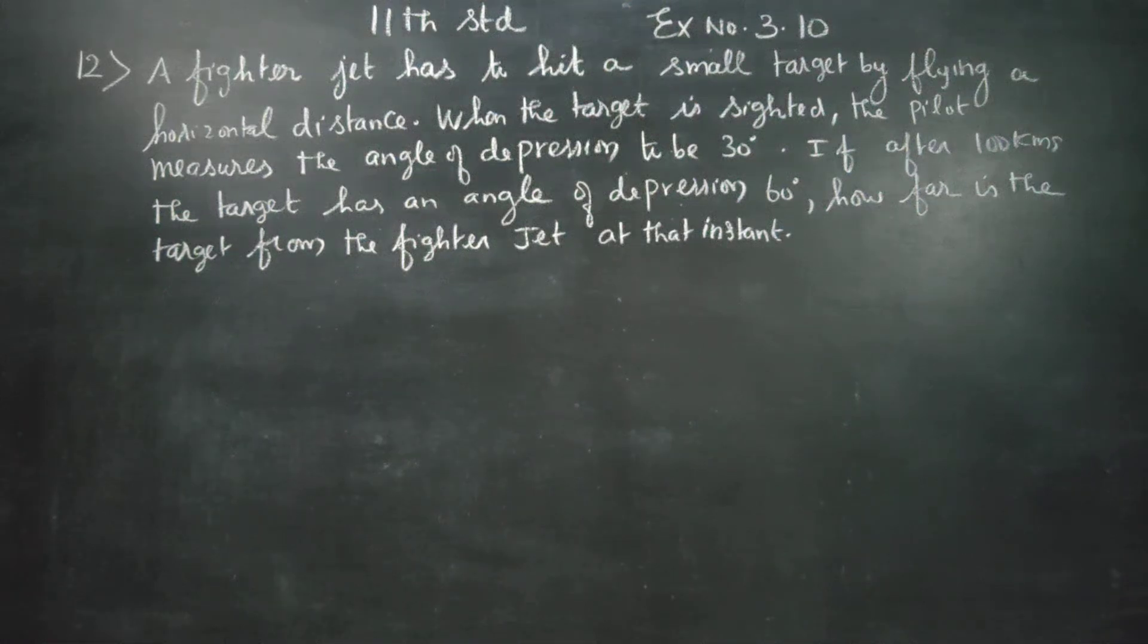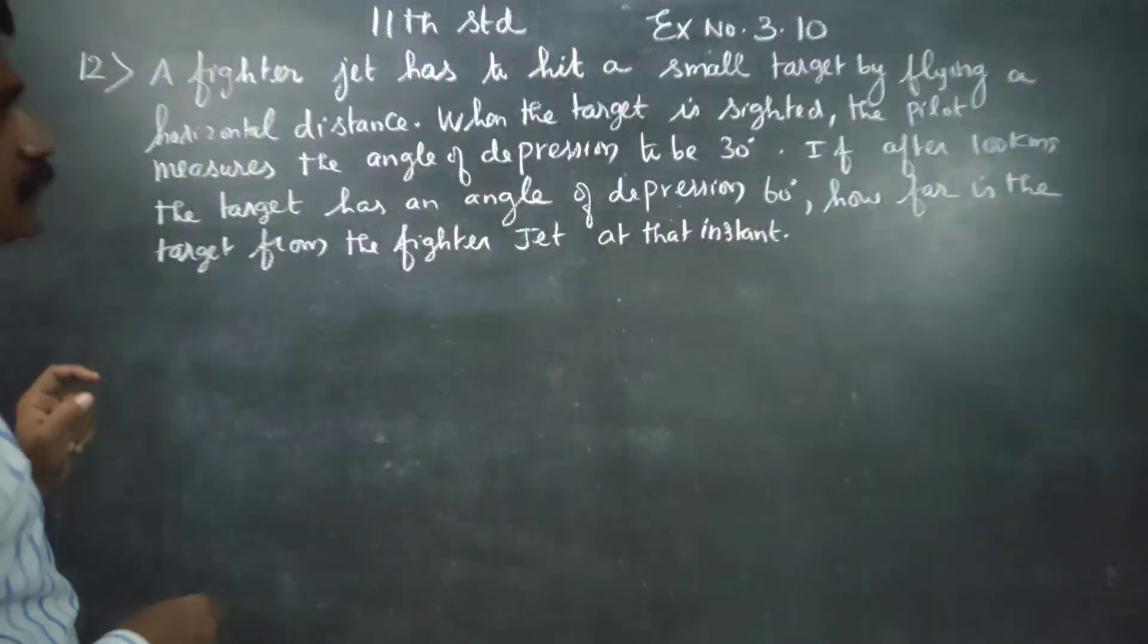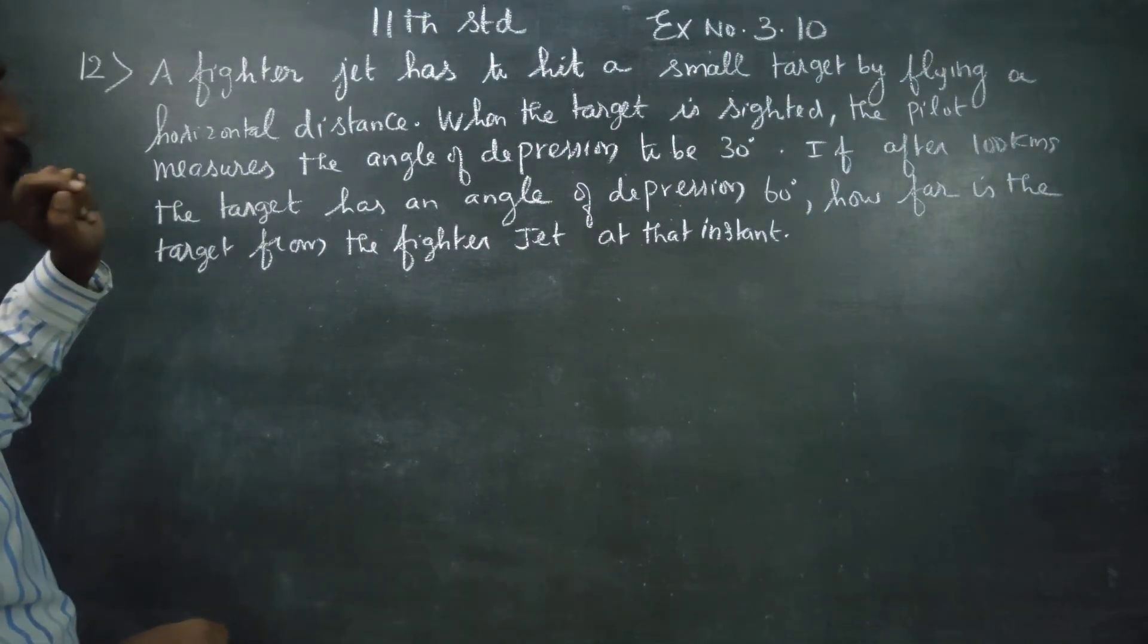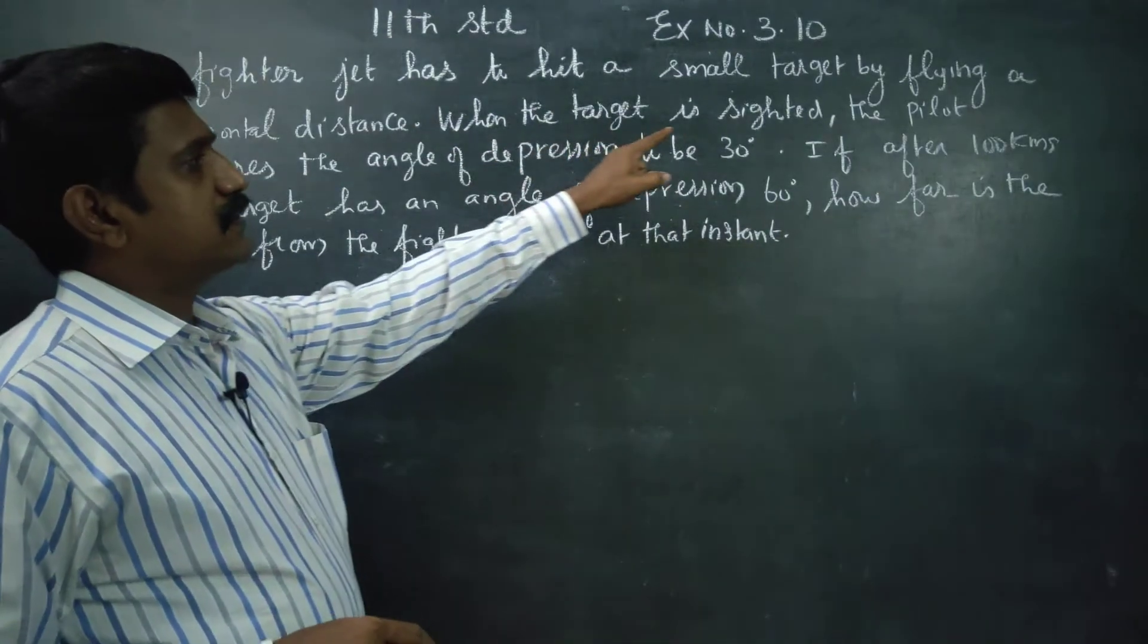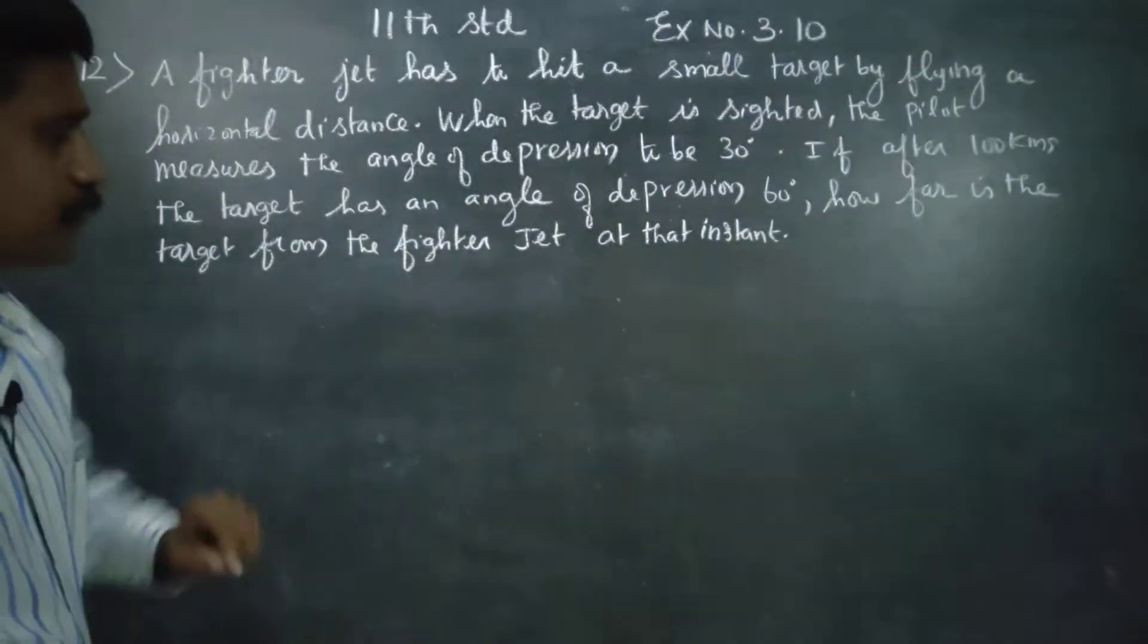Hello 11th standard students, in exercise number 3.10. A fighter jet has to hit a small target by flying a horizontal distance. When the target is sighted, the pilot measures the angle of depression to be 30 degrees.